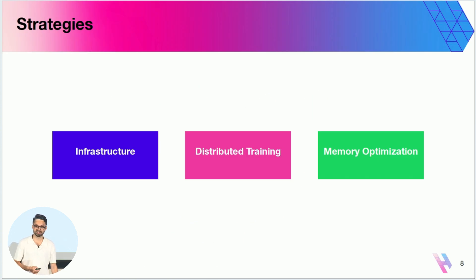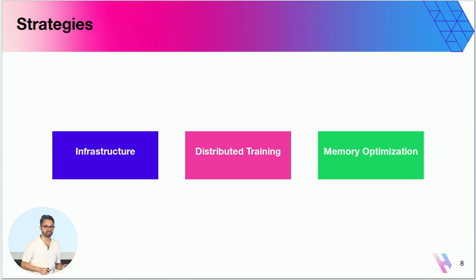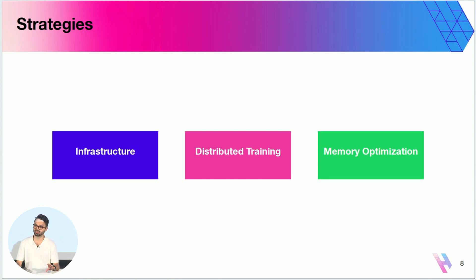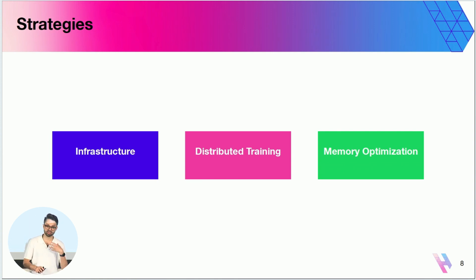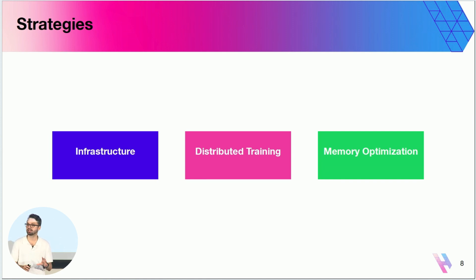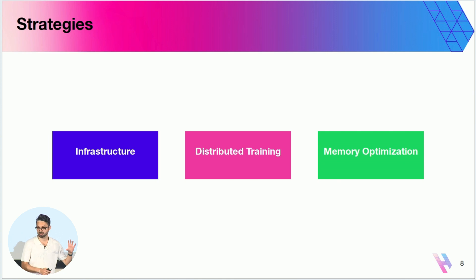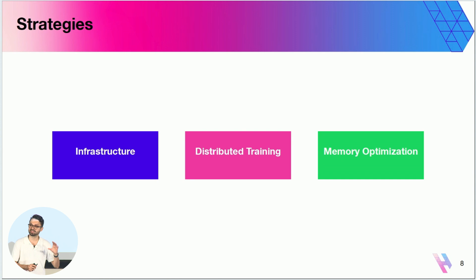If you have encountered these scenarios, today I'll be talking about three different strategies across three different layers that will help you overcome them. First I'll talk about infrastructure — what can you do at the core infrastructure layer to optimize and get better performance? On top of that I'll build on a distributed training layer — what can you do in terms of actually training your models faster? And finally I'll talk about memory optimization — what can you do on top of distributed training to save even more memory?